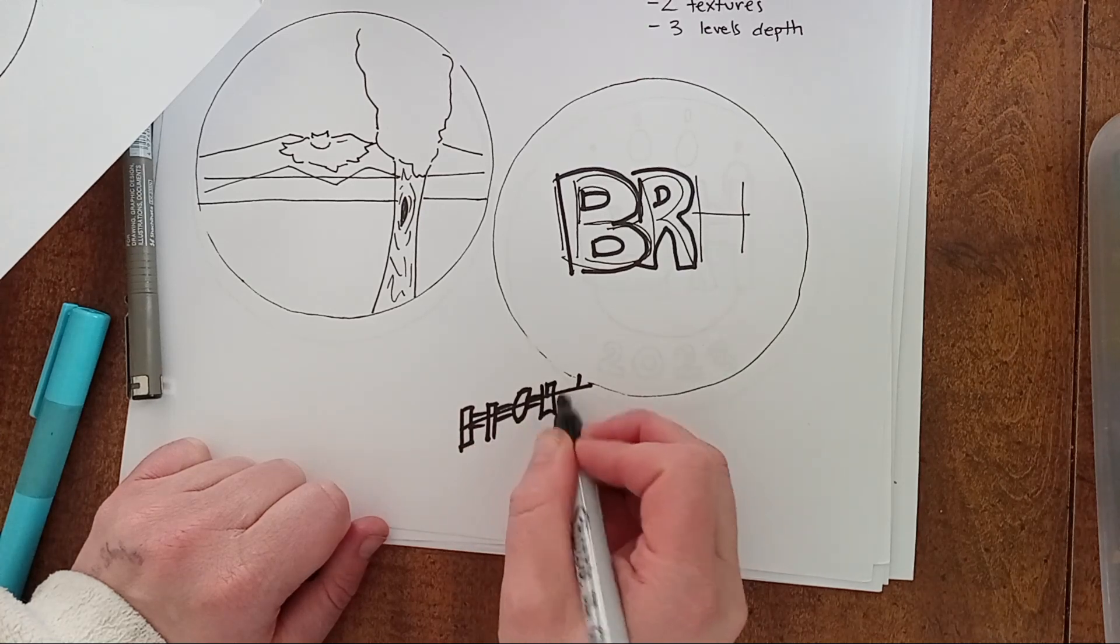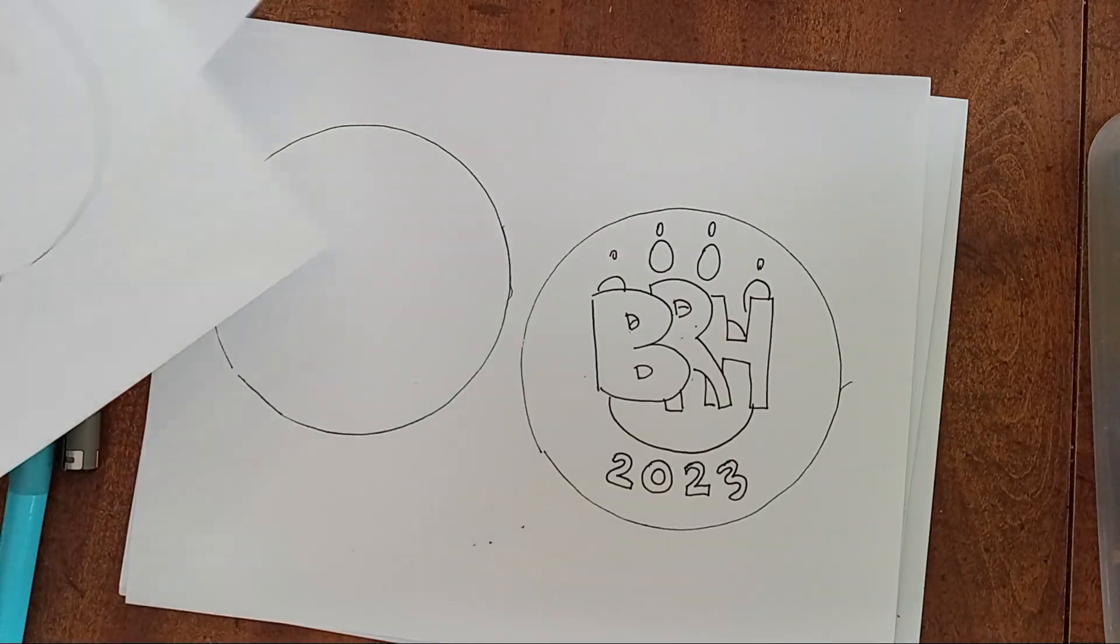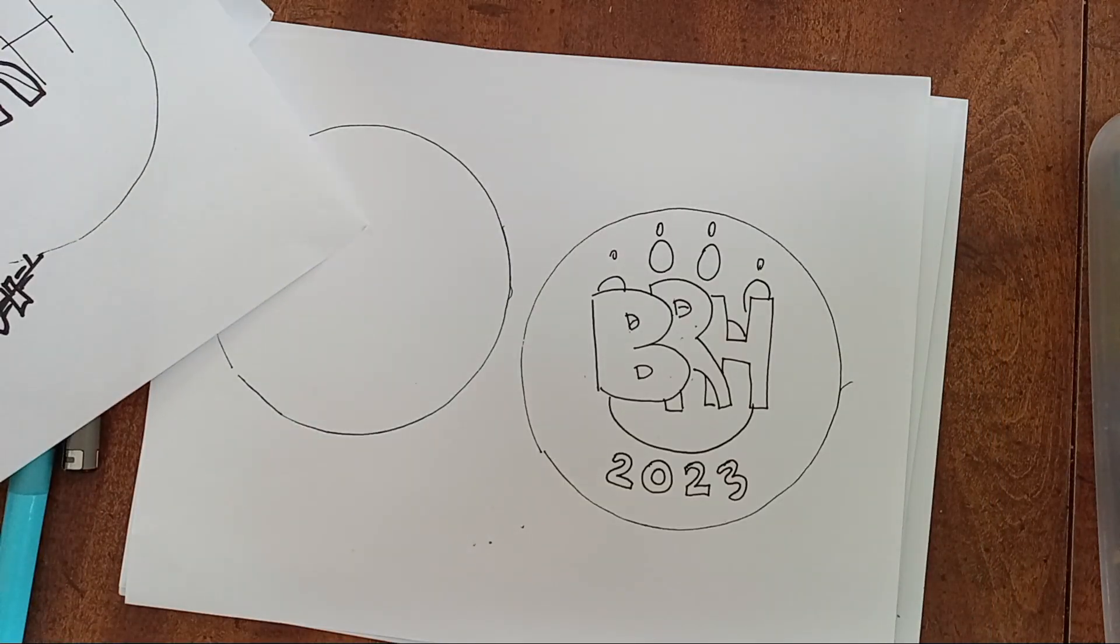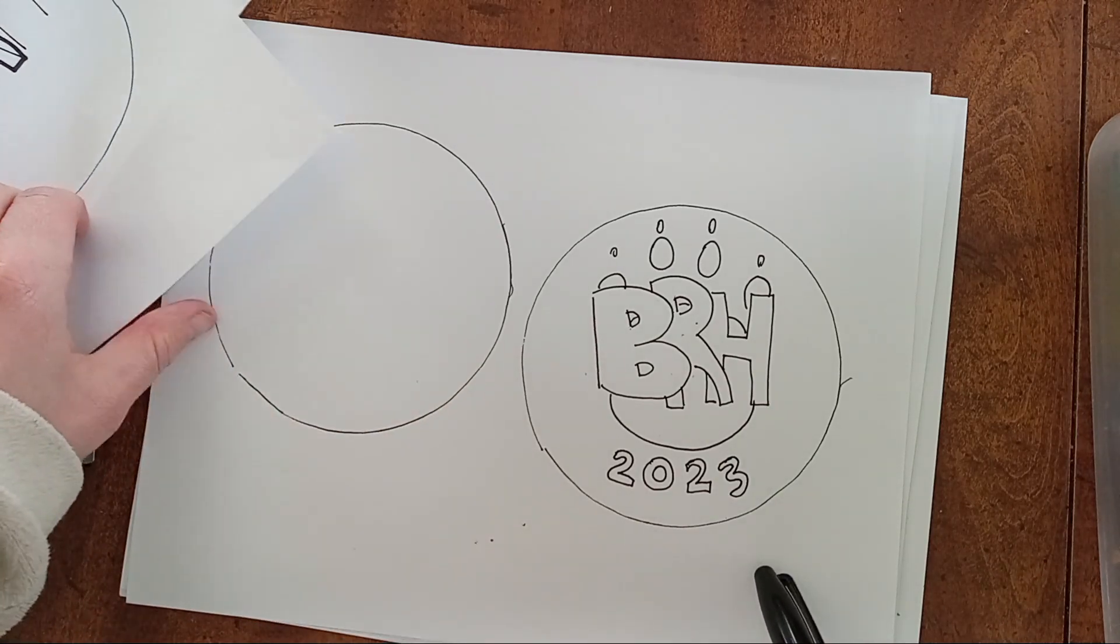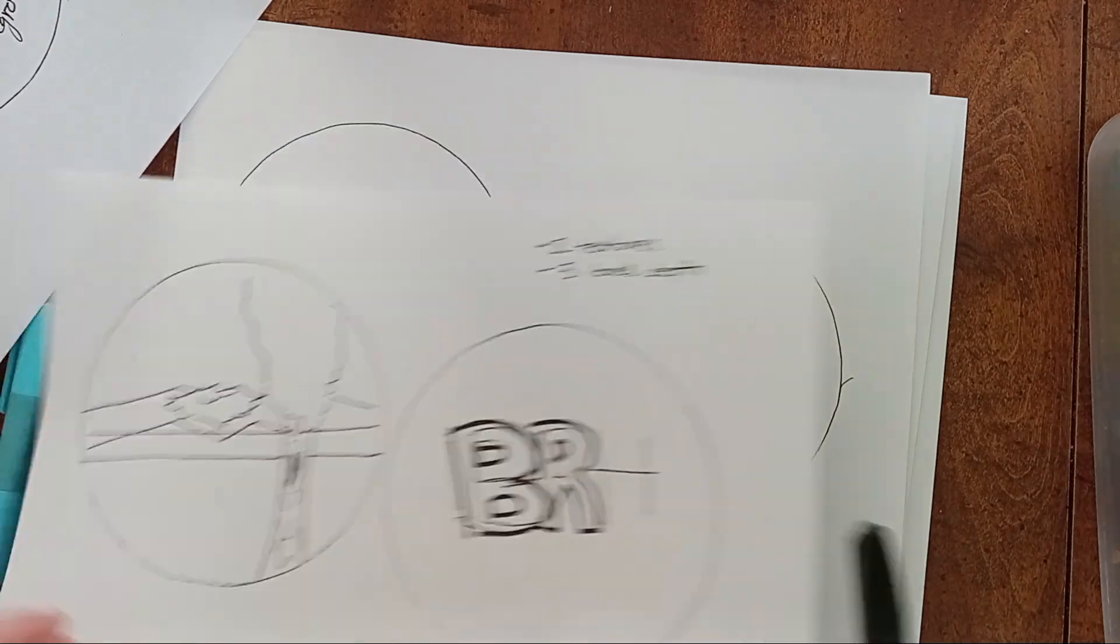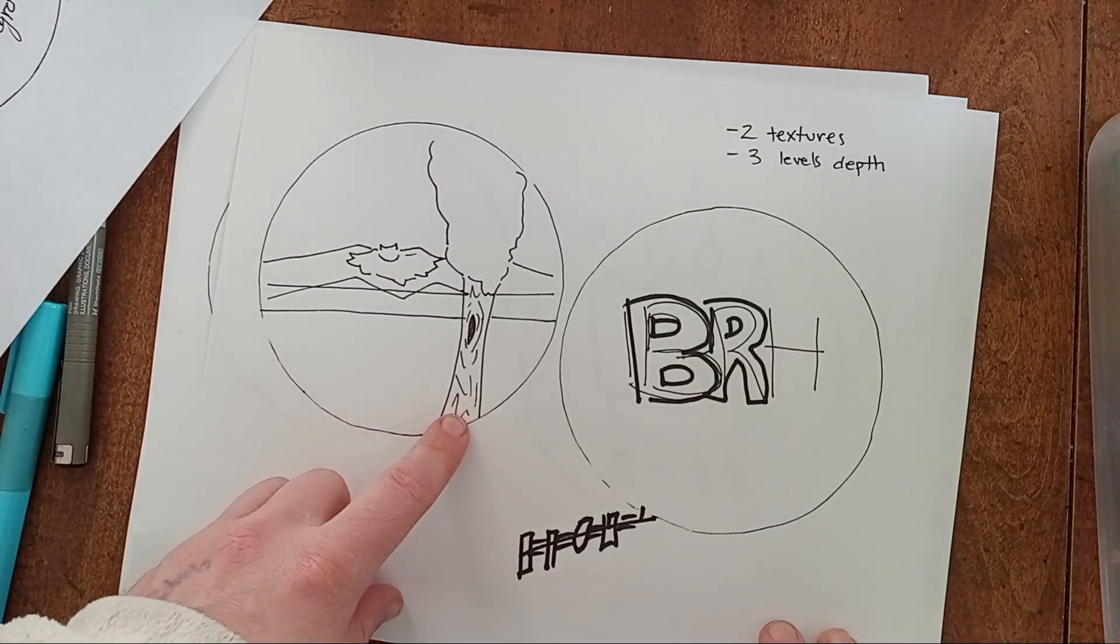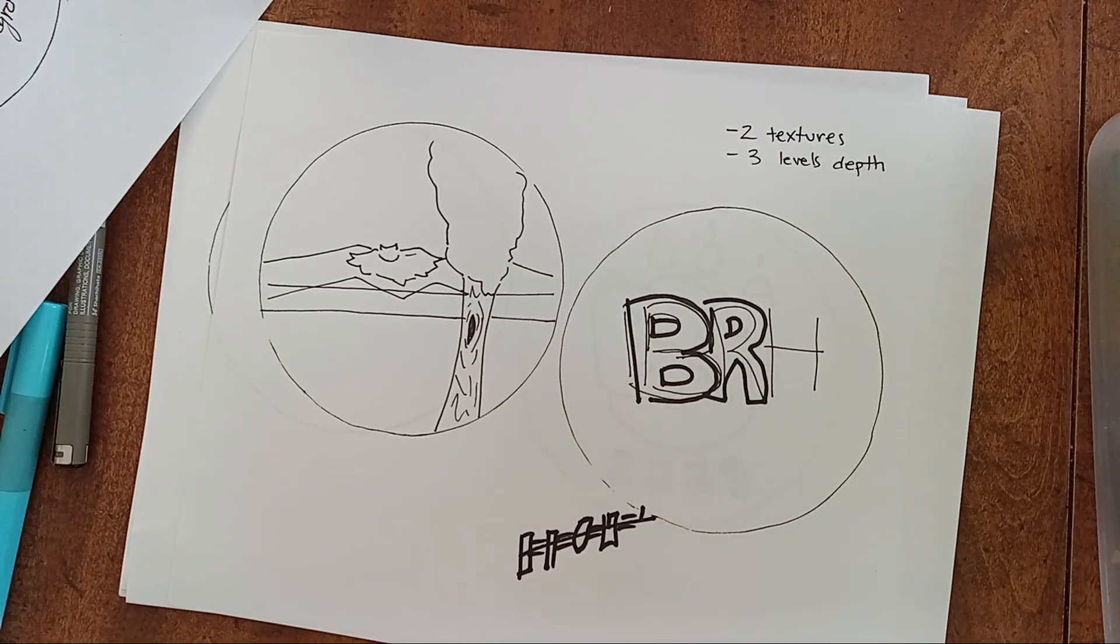So again, you're welcome to do whatever - it could be something very simple like a logo you've designed. You also need to think about at least two different kinds of textures associated with your relief. Example textures could be the bark on a tree, leaves on a tree, water, or if I have something simple...